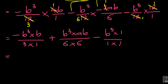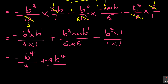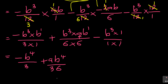Now simplify: b cubed times b - the negative is now positive - so b cubed times b is b to the power of 4, over 3. Plus: b cubed times ab gives b to the power of 4 (with b's hidden 1), so it's ab to the power of 4 over 36. Minus: b cubed times 1 is b cubed over 1, so minus b cubed. That's your final answer.